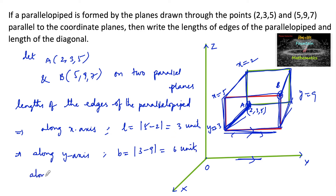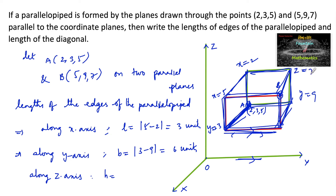Along the z-axis, the height h: we consider the top plane passing through point B whose z-coordinate is 7, and the bottom plane through point A whose z-coordinate is 5. So h = |7 − 5| = 2 units.